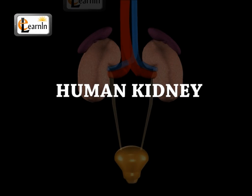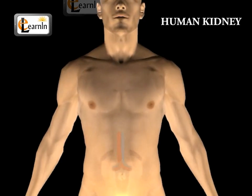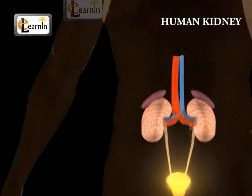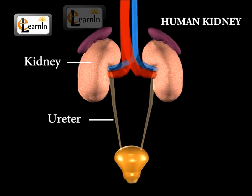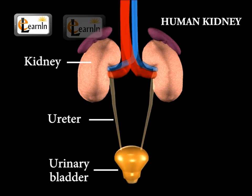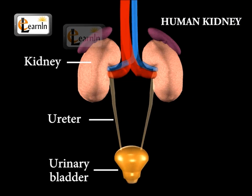The human kidney. In human beings, a pair of kidneys, a pair of ureters, and a bladder represents the excretory system.